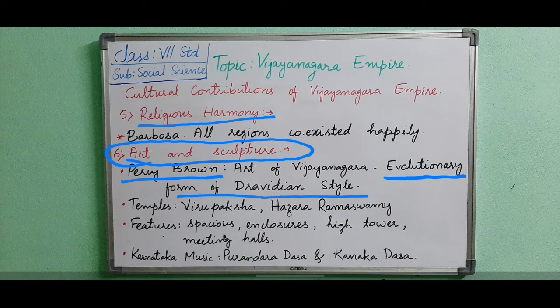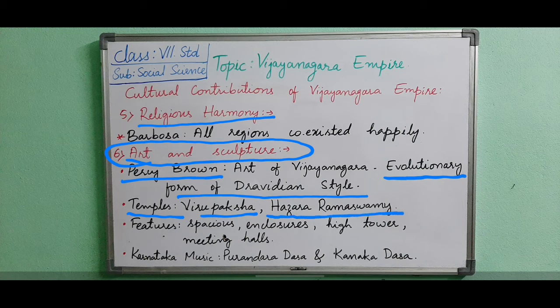Dravidian style means the South Indian style. The temples of that period were built with strong rocks. The Kalyana Mantapa and Virupaksha temple are located in Hampi, which is in Karnataka. Many other temples were also constructed, like the Hazara Ramaswami temple, Vithala Swami temple, and Krishna Swami temple — all constructed during the Vijayanagara period.